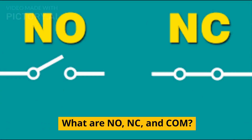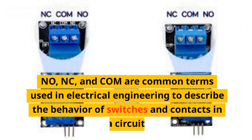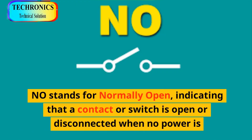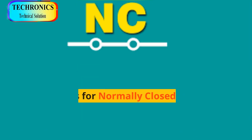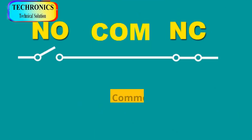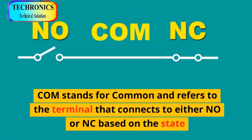NO, NC, and COM are common terms used in electrical engineering to describe the behavior of switches and contacts in a circuit. NO stands for normally open, indicating that a contact or switch is open or disconnected when no power is applied. NC stands for normally closed, meaning a contact or switch is closed or connected when no power is applied. COM stands for common and refers to the terminal that connects to either NO or NC based on the state of the switch.